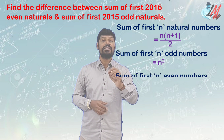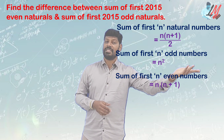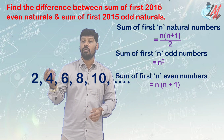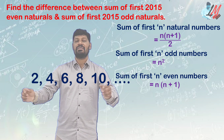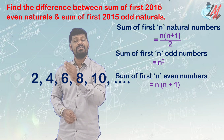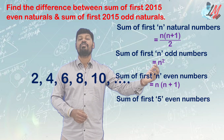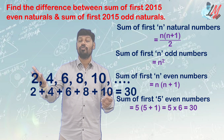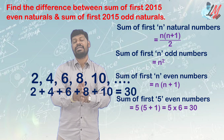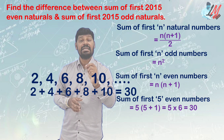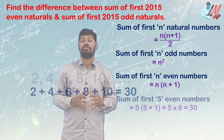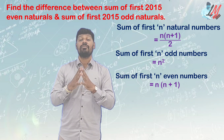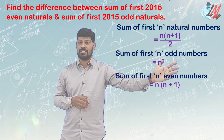The sum of the first N even numbers is N(N+1). For example, if you have 5 even numbers — 2, 4, 6, 8, 10 — then 5 even numbers sum = N(N+1) = 5×6 = 30. The sum of the first N odd numbers is N². These are the three key formulas.